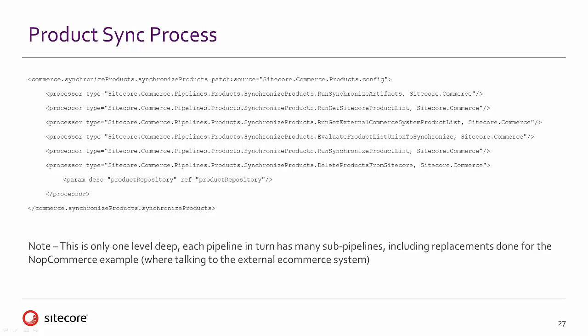Let's go through some of the product synchronization process from the pipelines. The pipeline list here matches very closely what we saw in the user interface when we were actually doing the product synchronization within Sitecore. First, we're running a synchronization on the artifacts — things like lookups, getting the list of manufacturers, getting the list of specifications. Those come first because when a Sitecore content item is created for a product, it needs to have those lookup items to point to. Then there's a process getting the list of products within Sitecore, an external lookup getting the list from the external system, an evaluation comparing the two lists, a synchronization process to reconcile them, and then a delete process from Sitecore if necessary.